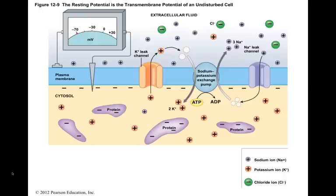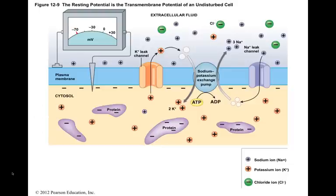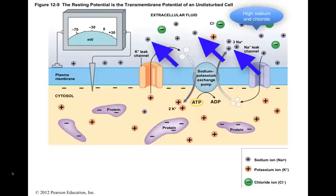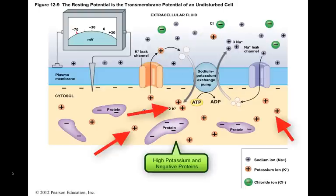There are three important concepts regarding the transmembrane potential. First, the extracellular fluid and the intracellular fluid differ in ionic composition. The extracellular fluid contains high concentrations of sodium ions and chloride ions, whereas the cytosol contains high concentrations of potassium ions and negatively charged proteins.